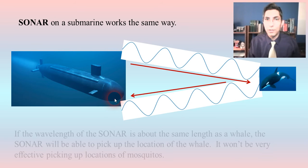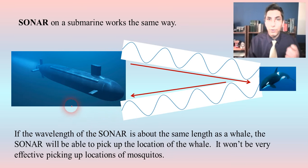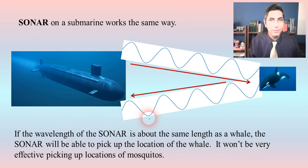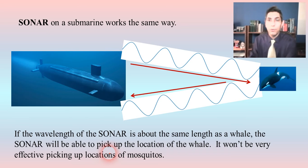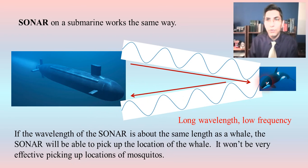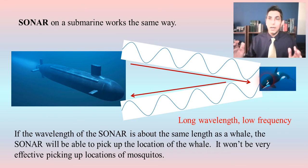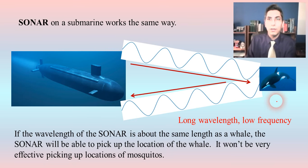In this case, in order for the submarine to pick up the whale, the wavelength of that sonar has to be about the same length as the whale. So the sonar will be able to pick up the location of the whale or whatever other object is about the size of a whale. Notice we have a large object to detect, so we need a longer wavelength, which means a lower frequency — long wavelength means lower frequency.